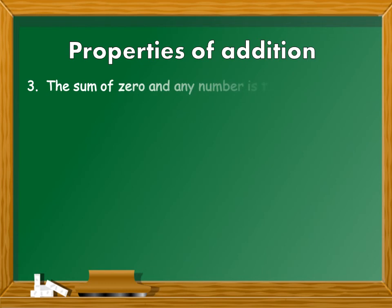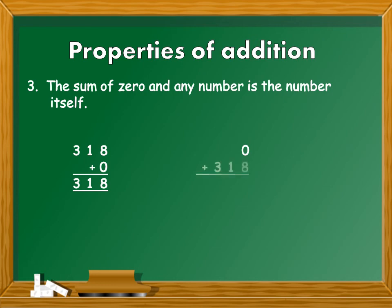The next property of addition is the sum of 0 and any number is the number itself. For example, 318 plus 0 is equal to 318. Or if you interchange the addends and write 0 plus 318, the sum is 318.